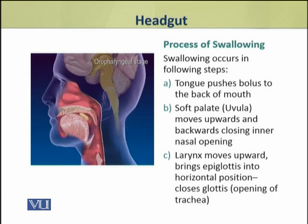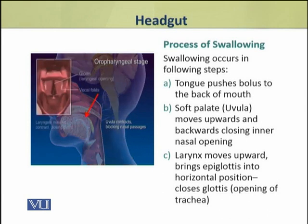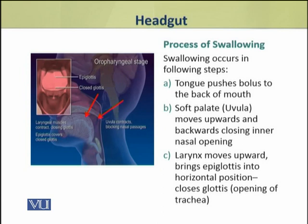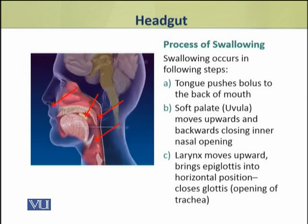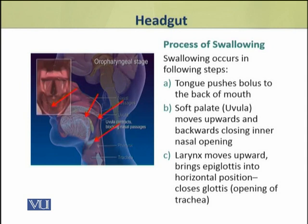Swallowing occurs in many steps. First, the tongue pushes the bolus to the back of the mouth. Then, the soft palate or uvula moves upward and backwards, which closes the nasal opening. Then, the larynx moves upward and brings the epiglottis to a horizontal position. This process closes the glottis, which is the opening of the trachea. This process is very important — the closing of the glottis is very important.